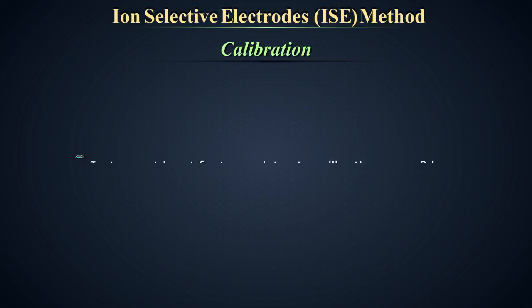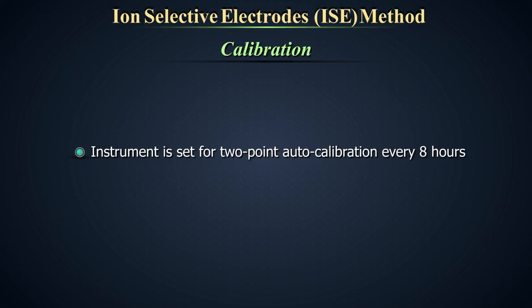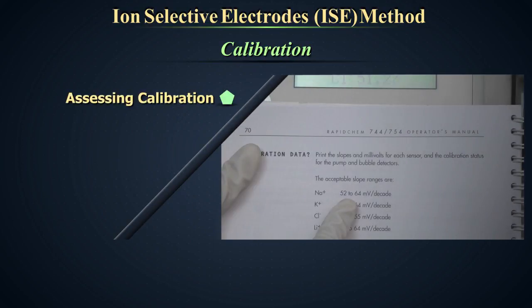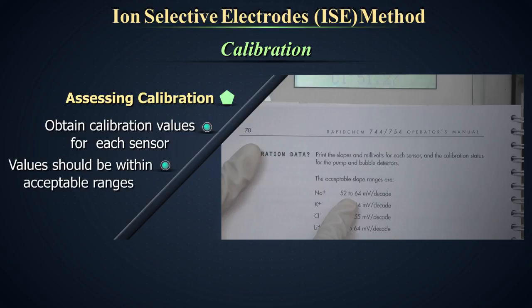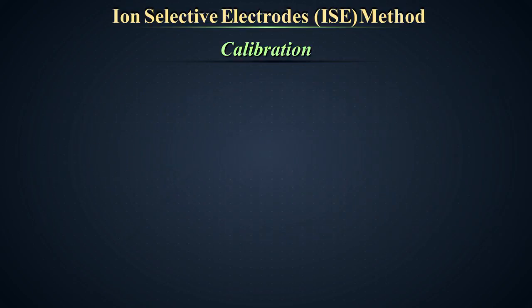Calibration. This instrument is set for 2-point auto-calibration every 8 hours by the manufacturer. It may differ for machines from different manufacturers. Assessing calibration. The calibration performed by the machine is assessed by obtaining calibration values for each sensor. These values should be within acceptable ranges which are defined by the manufacturer. Check these values daily and document.